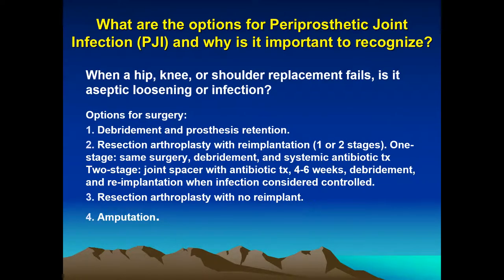If the revision arthroplasty specimen is infected, the surgeon has several options. First, they could debride it and retain the prosthesis. Second, they can perform resection arthroplasty with re-implantation, done in one or two stages. In the United States, a two-stage surgery involving a joint spacer with antibiotic therapy is much more common, with debridement and re-implantation occurring after approximately four to six weeks once the infection is considered controlled.